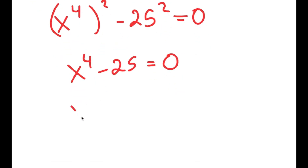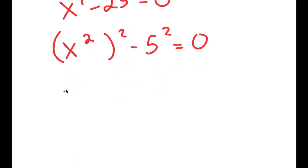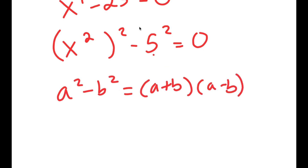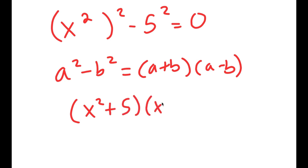From here, I rewrite this as x squared, quantity squared, minus 5 squared equals 0. Using the formula a squared minus b squared equals a plus b times a minus b, this becomes x squared plus 5 times x squared minus 5, equals 0.